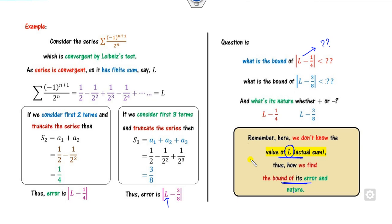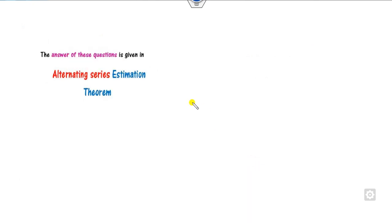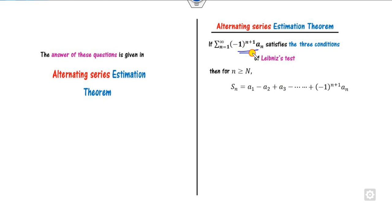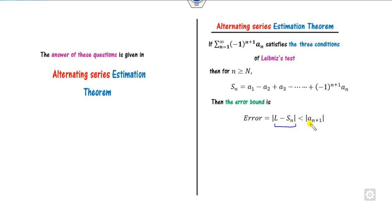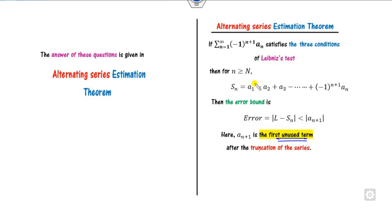To answer these two open questions, there is a theorem called the Alternating Series Estimation Theorem. What is the statement? If you have an alternating series which is convergent by the Leibniz test, and S_n is the nth partial sum, then the error bound — that is |L minus S_n| — is less than a_{n+1}. This answers the first question: the bound of the error is less than the absolute value of a_{n+1}, which is the first unused term after the truncation.